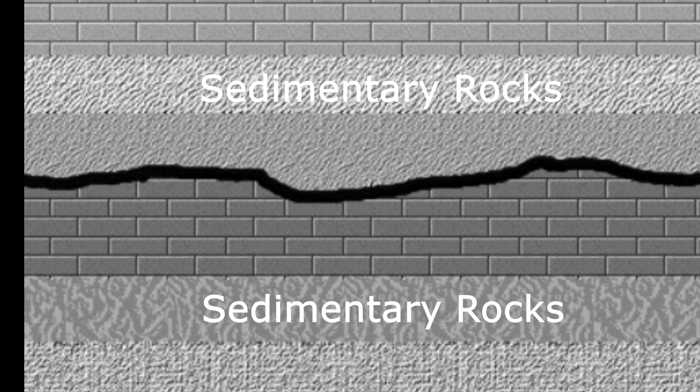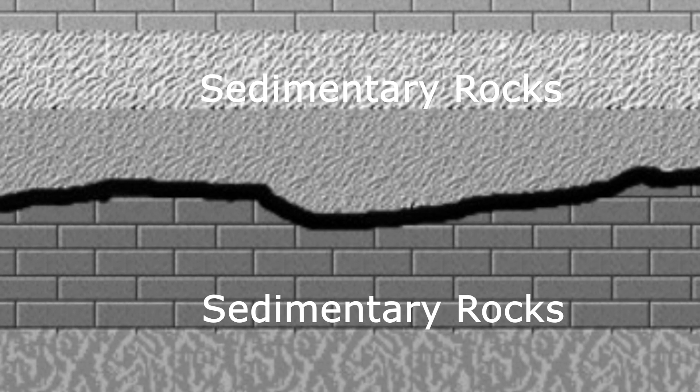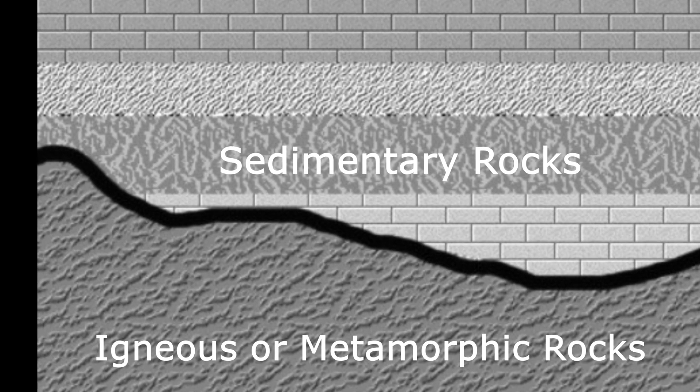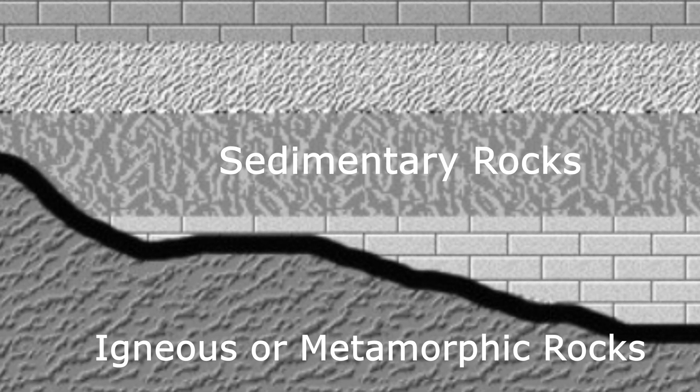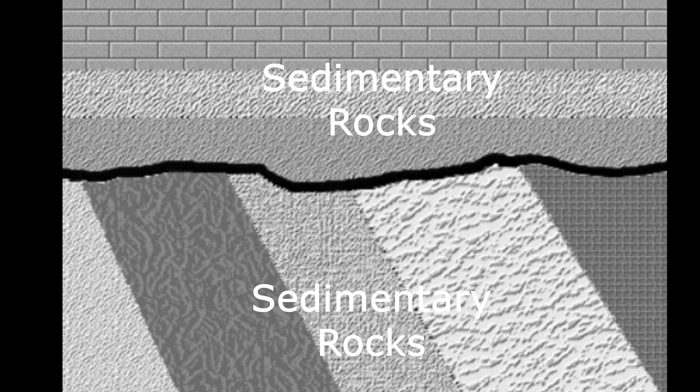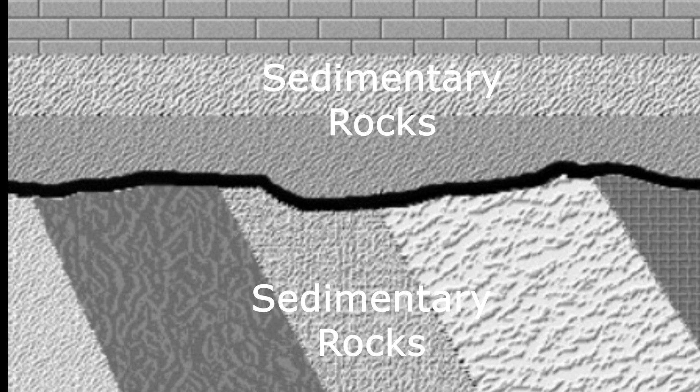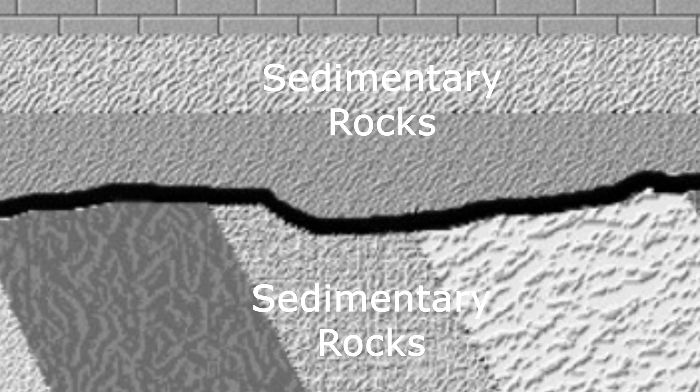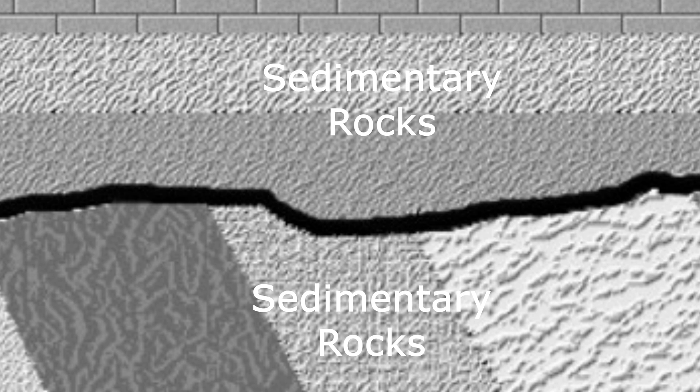Before we explore the site, let's talk about unconformities. An unconformity is a gap in the geologic record, either due to erosion or non-deposition of rock. There are three main types: disconformities, where deposition occurs, then erosion, then further deposition on top; non-conformities, where igneous or metamorphic rock is overlain by sedimentary rock with missing time between; and angular unconformities, where sediments are deposited, rotated by tectonic forces like faults, planed off by erosion, and then covered by new deposition. All represent missing geologic time.